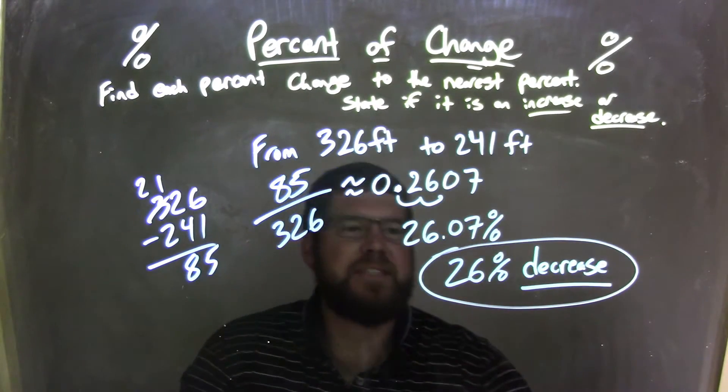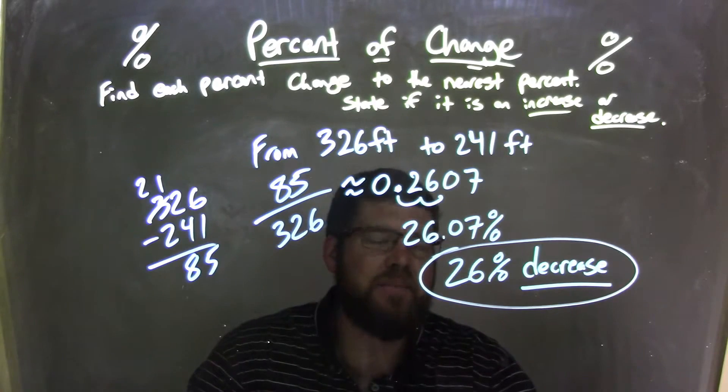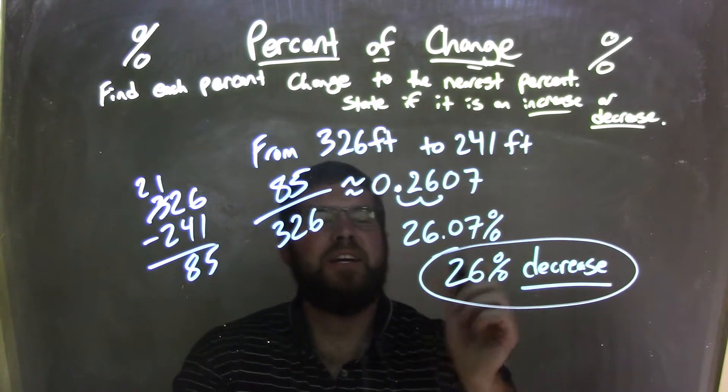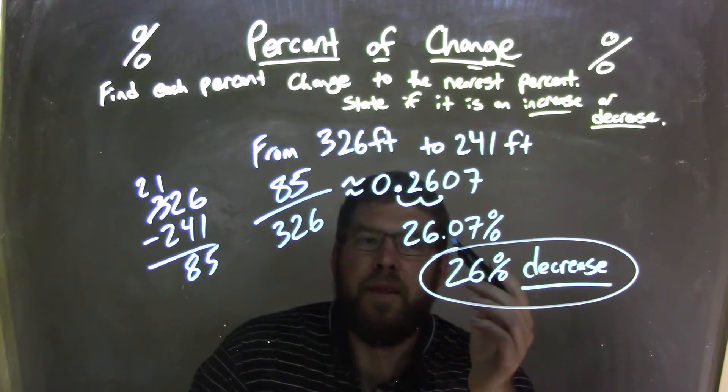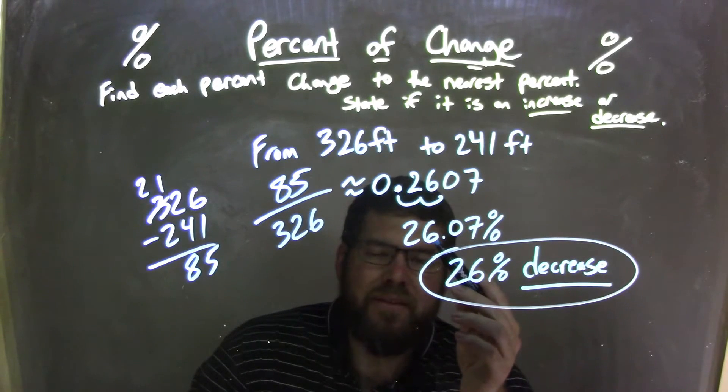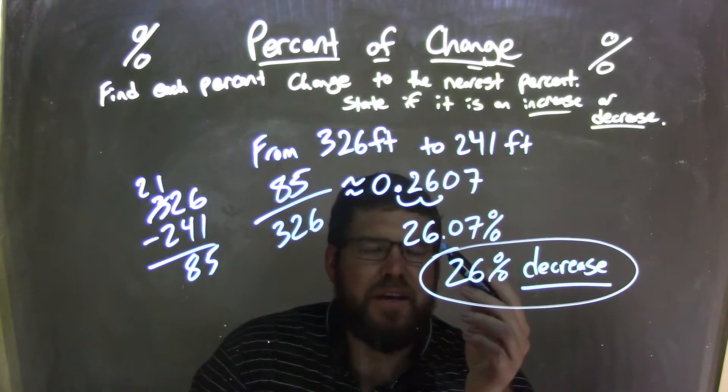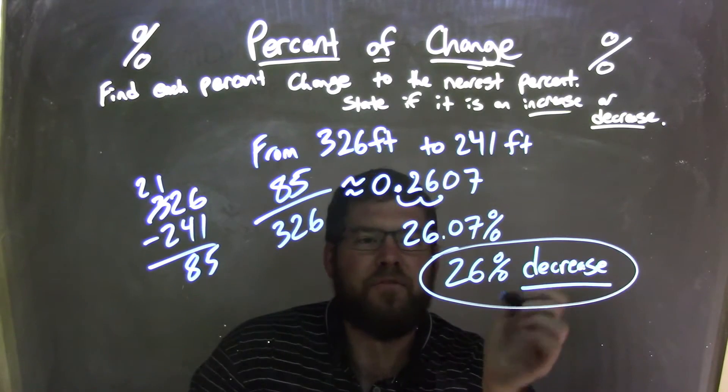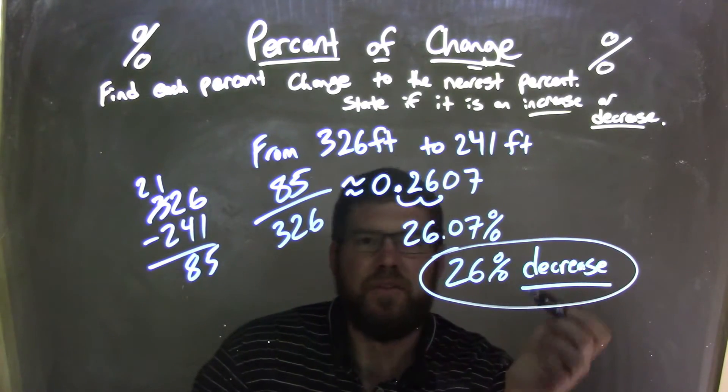26.07% is our percent change, but it needs to round to the nearest percent. That 0 causes the 6 here to stay a 6. So we're left with the final percent of a 26% decrease.